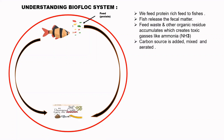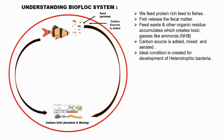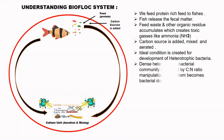Carbon sources are added, mixed and aerated. This creates ideal conditions for the development of heterotrophic bacteria. A dense heterotrophic bacterial community is created by carbon-to-nitrogen (CN) ratio manipulation, and the system becomes bacteria-dominated.